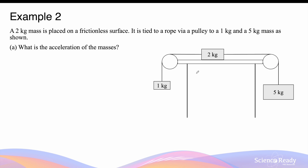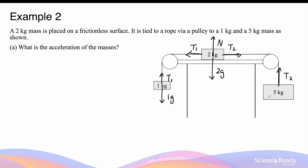Let's look at a scenario where there are three masses in the same system. A 2kg mass is placed on a friction surface, tied to a rope by two pulleys to a 1kg mass and a 5kg mass. For the 1kg mass, we have a downward weight force of 1g and an upward tension T1. For the 2kg mass, we have a downward weight force 2g, an upward normal force N, and two tension forces T1 and T2 going left and right respectively. It is important to recognize that T1 and T2 will be different in magnitude because they are in different ropes.